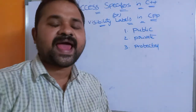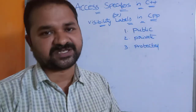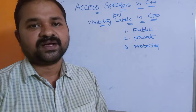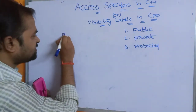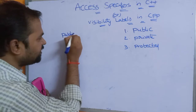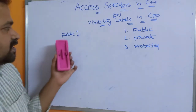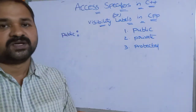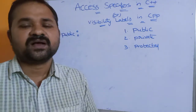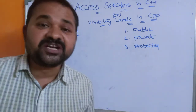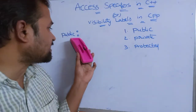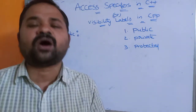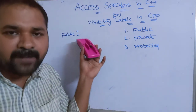Let us discuss these three access specifiers one by one. The first one is the public access specifier. Under the public section, after the access specifier we use a colon symbol. The members declared as public can be accessible throughout the program — inside the class, outside the class, in the main function, anywhere. The members may be either variables or functions.